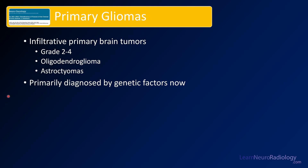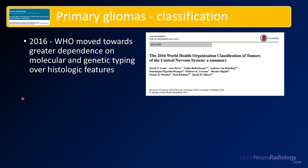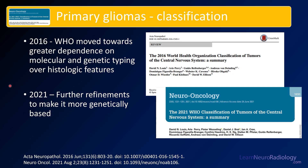The primary gliomas cover grade 2 to 4 primary brain tumors — primarily oligodendrogliomas and astrocytomas. The histologic diagnosis is now predominantly made by genetic factors. When classifying gliomas, there has been a major move toward greater dependence on genetic typing. This started around 2016 when the WHO reclassified many of these tumors, favoring histologic features and molecular testing. They took this further in 2021 to make classification even more genetically based, including tumors that can have molecular features even when their histology appears different.